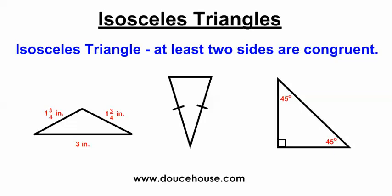Hello everybody, how you doing? This is Mr. Douse. In this video I'm going to talk about isosceles triangles. Remember, isosceles triangles are triangles that have at least two sides that are congruent.